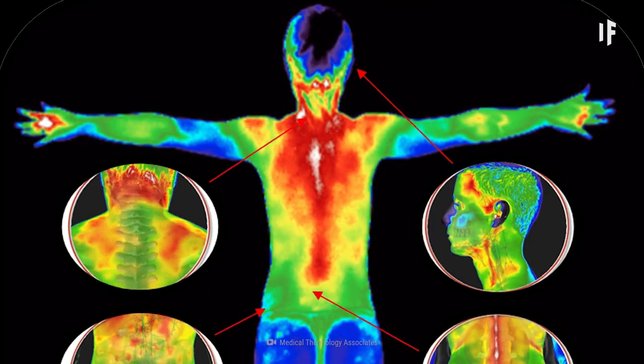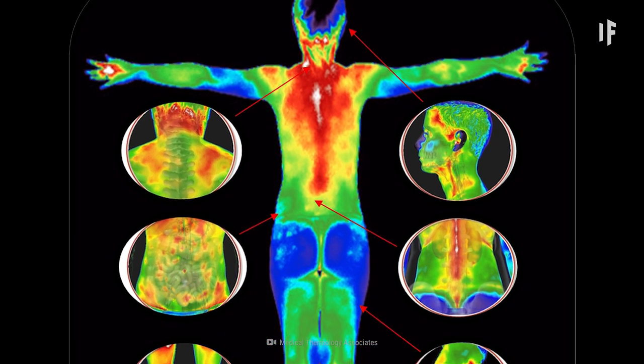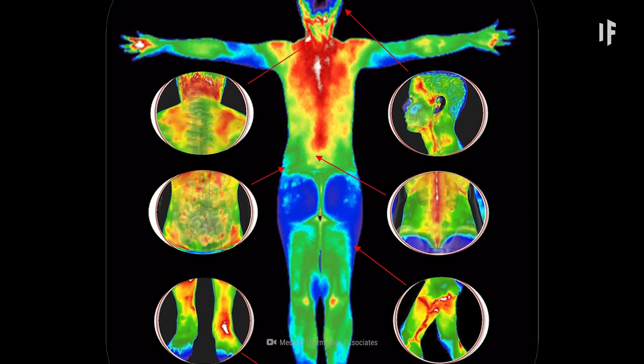Scientifically, medical ailments would also be a lot easier to catch. Things like diseases, circulation problems, infections, and even cancers cause temperature changes that would quickly be detected. Our newfound vision wouldn't just help fight the things that plague our bodies, but also our minds.